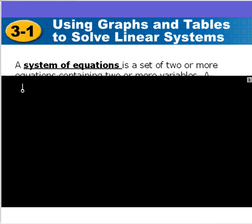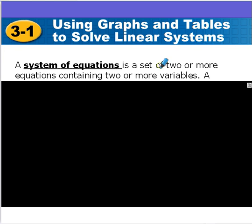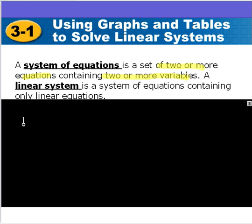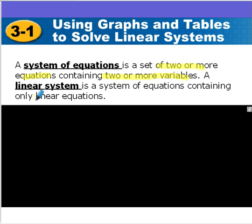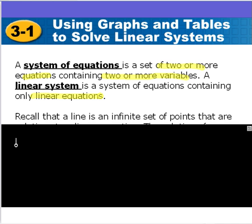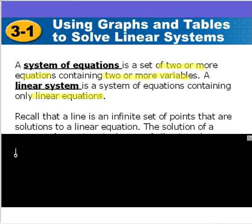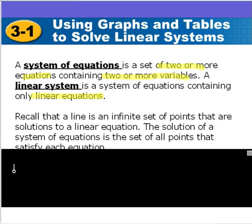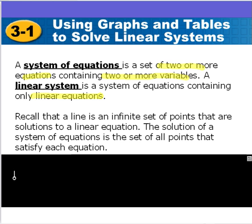A system of equations is a set of two or more equations containing two or more variables. A linear system is just a system that only has linear equations. Remember, a line is an infinite set of points that represents the solutions to a linear equation. So when you graph a linear equation, you're graphing the solution for that equation. A solution for a system of equations is a set of all points that satisfies all the equations in that system.